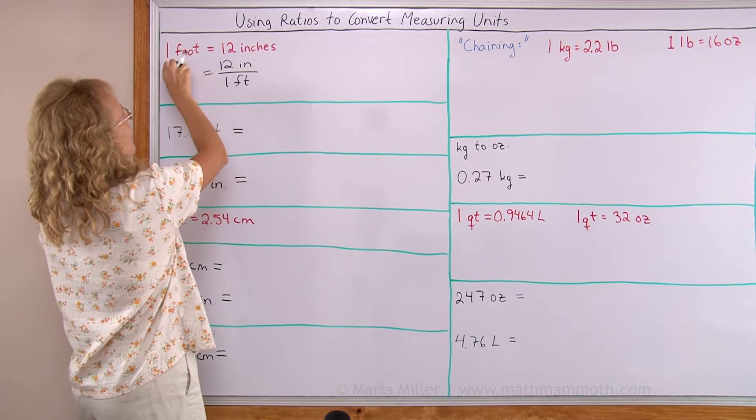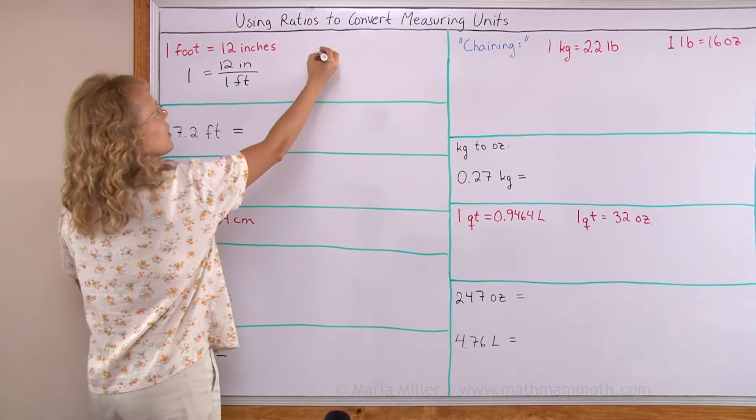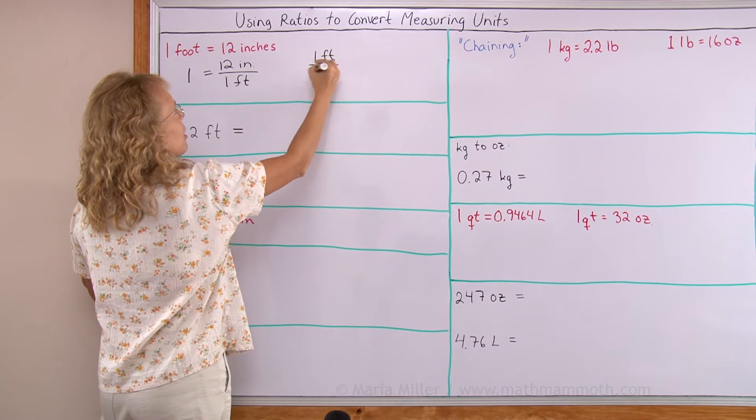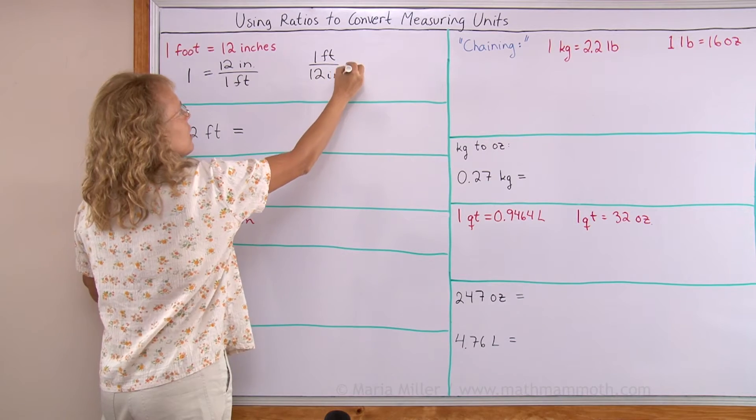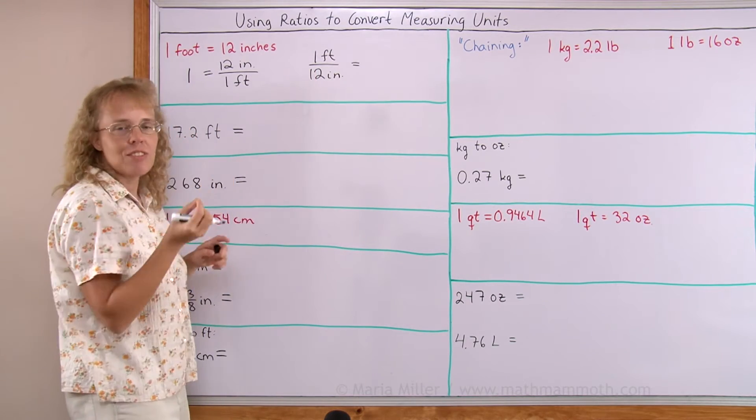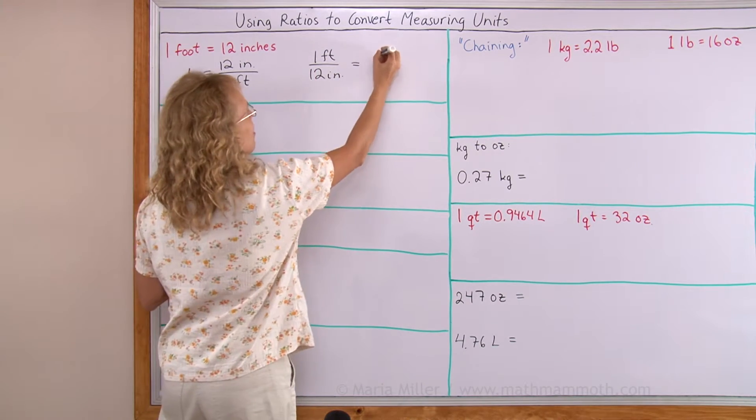If I divide this side by 12 inches, I get then one foot divided by 12 inches. Then on this side, 12 inches divided by 12 inches is one.